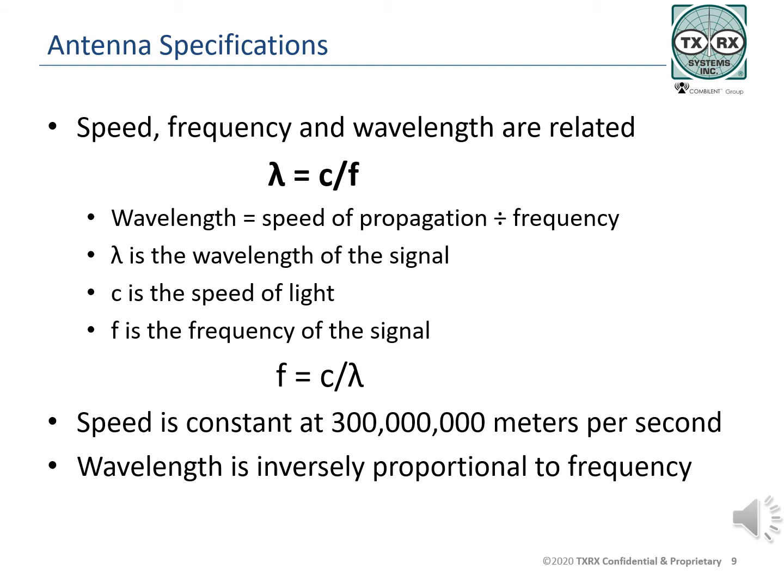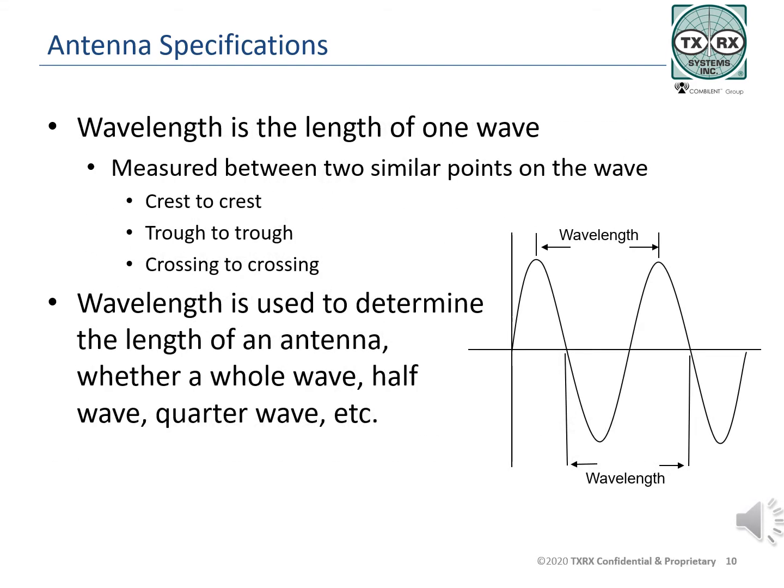Dropping equal numbers of zeros from both large numbers simplifies the math considerably — 300 divided by 174 results in the same wavelength. If the wavelength is known, the formula may be rearranged to give the frequency: frequency equals the speed of propagation divided by wavelength. Wavelength is the distance between recurrent points on a wave, measured from one peak to the next or from one x-axis crossing to the next. Wavelength is inversely proportional to frequency — as frequency increases, wavelength decreases, and as frequency decreases, wavelength increases.